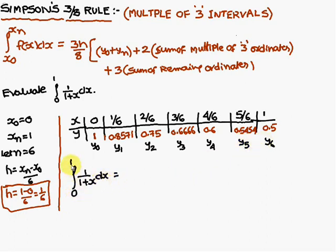Now, the formula: integral 0 to 1, 1 by 1 plus x dx is 3h by 8, 3 into h stands for 3h by 8 is the formula, h is 1 by 6 divided by 8 into y0 plus yn.